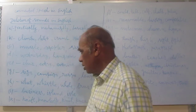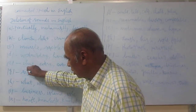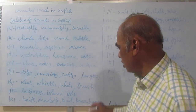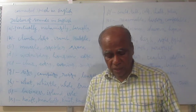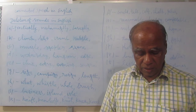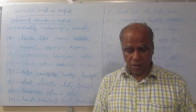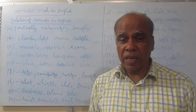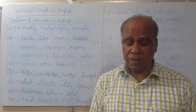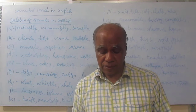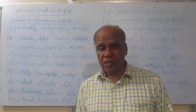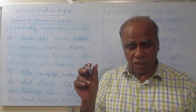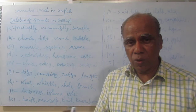Next, the letter 'g' — 'g' is deleted in words like: sign, campaign — the 'g' is deleted; design, align, assign, benign (B-E-N-I-G-N), consign, ensign, malign. Also: length, strength. And then gnome (G-N-O-M-E) — the 'g' is deleted; we pronounce it 'gnome', not 'gnome'.